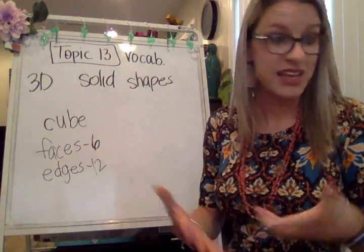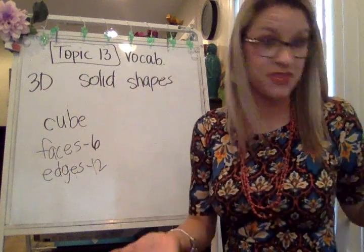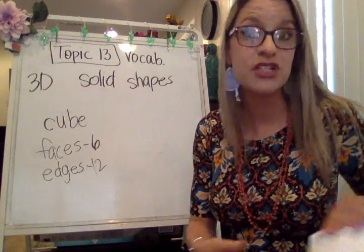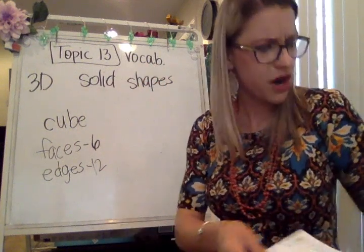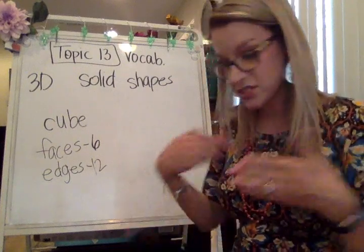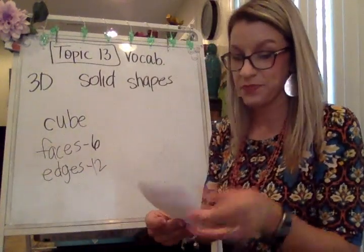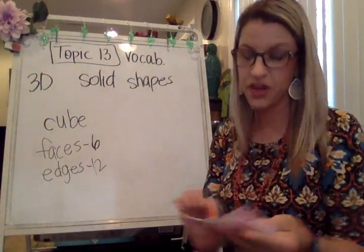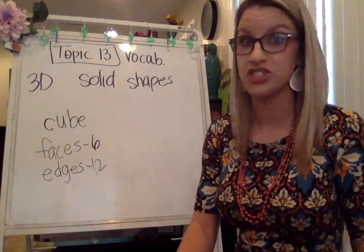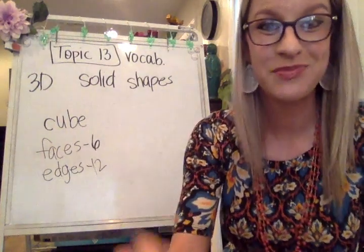That's what an edge is — just this line along the side. That's kind of what I need you to know going into Topic 13. This is the first part of our vocabulary; there are some additional vocabulary terms we'll discuss. Coming up, there are other skills we're going to talk about as far as partitioning different shapes. This is Topic 13 vocab intro.